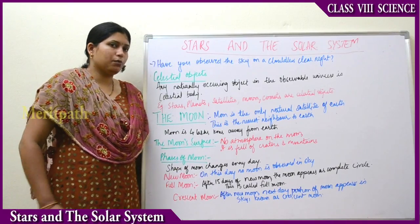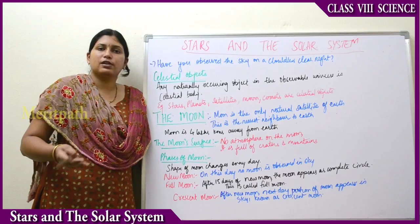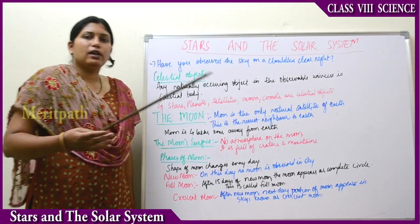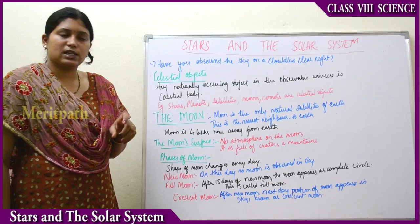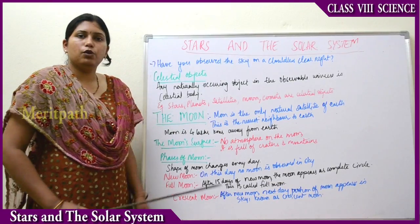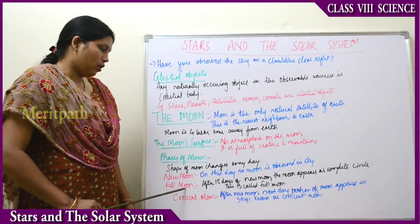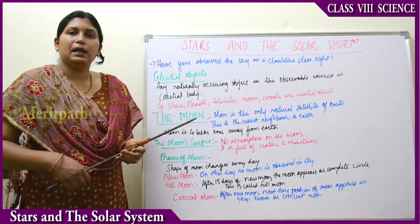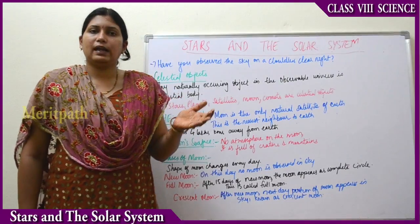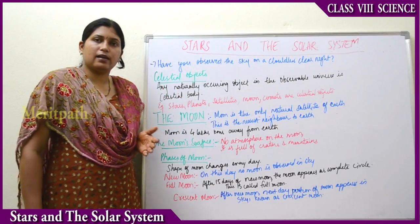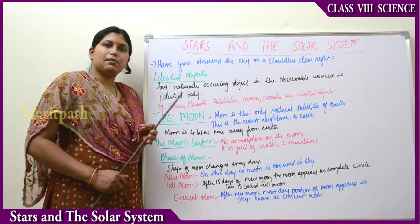The phases of the moon refer to the fact that the shape of the moon changes every day. When we see the moon in the sky, every day the size is not the same. On different days the moon has different shapes. Sometimes it is a complete circle, sometimes a semi-circle, sometimes a crescent shape, and sometimes there is no moon at all.